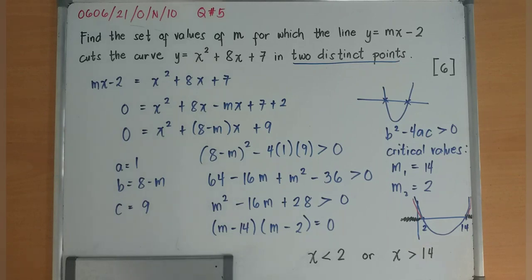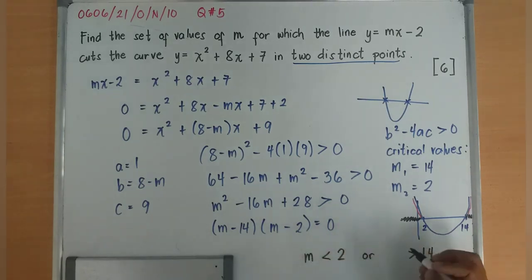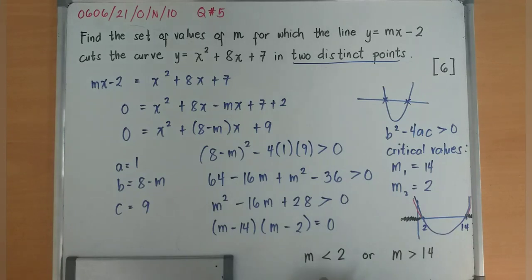x is less than 2 or x is greater than 14. But it's not supposed to be x. It should be m because we are solving m. So m is less than 2 or m is greater than 14. So these are the set of values of m.